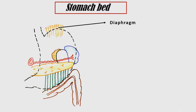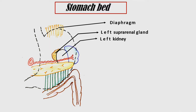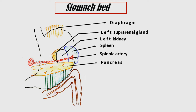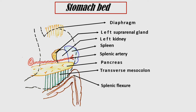First is the diaphragm, then the left suprarenal gland, left kidney, spleen, splenic artery, pancreas, transverse mesocolon — which extends from the transverse colon to the body of the pancreas — and the last structure is the splenic flexure of the colon.